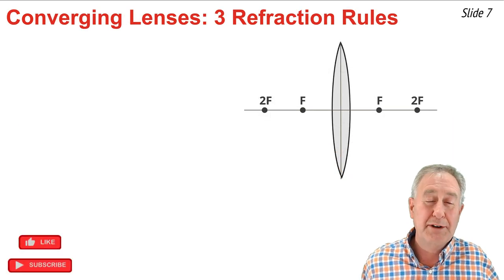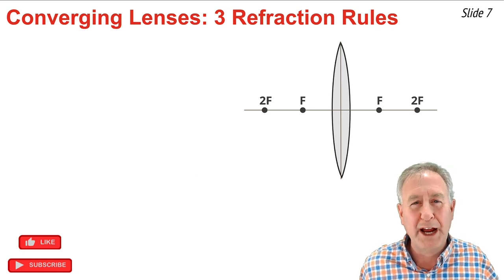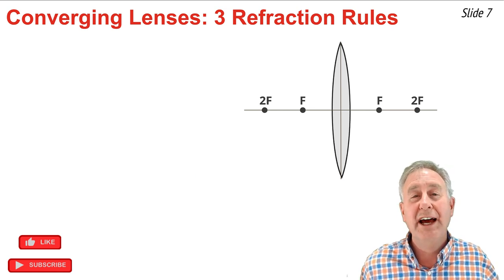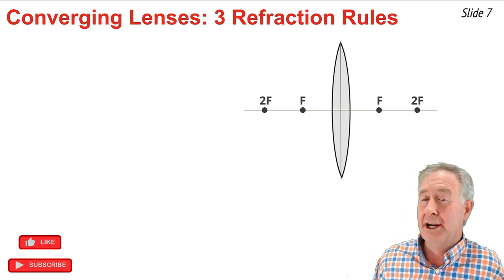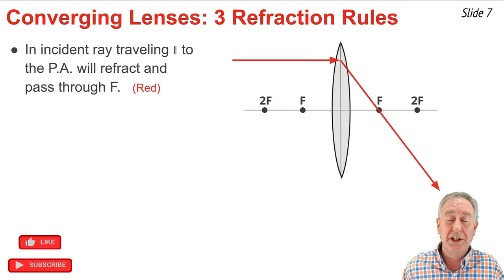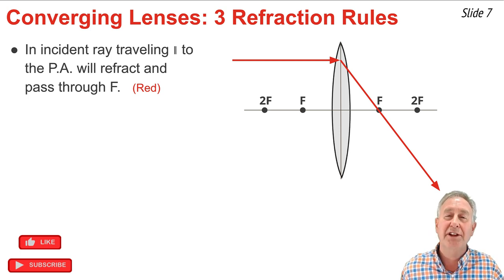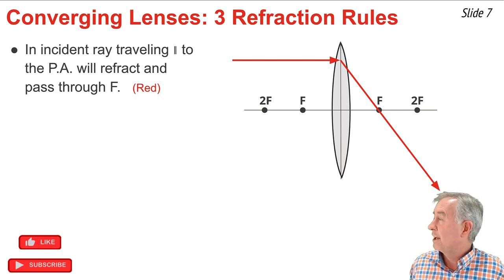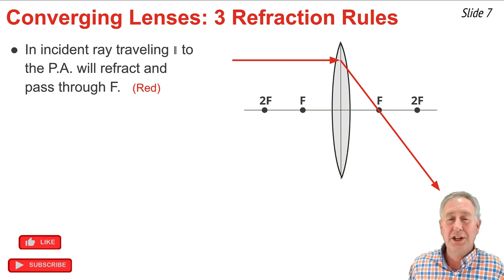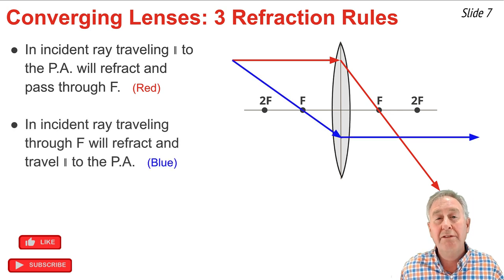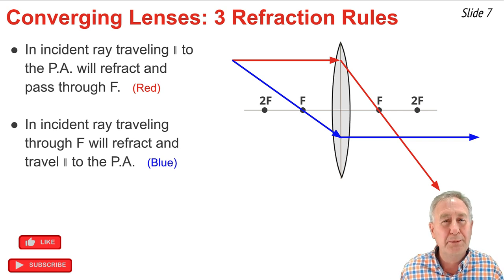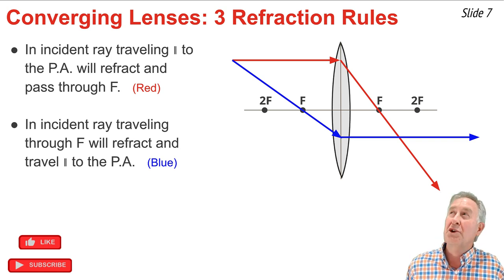The previous slide demonstrated two of the three so-called rules of refraction for converging lenses. The first rule is that a ray of light traveling parallel to the principal axis will refract and pass through the focal point on the opposite side of the lens — shown by the red incident and refracted ray. The second rule is that a ray of light that travels through the focal point on the way to the lens will refract and travel parallel to the principal axis — shown by the blue incident and refracted ray on the diagram above.